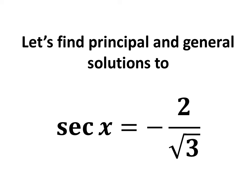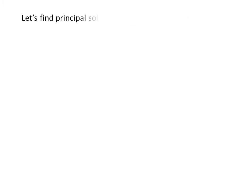In this video, we will learn to find the principal and general solutions to the equation secant of x is equal to minus 2 upon square root of 3. Let us first find the principal solutions. We know the solutions to the trigonometric equation for which x is greater than or equal to 0 and less than 2 times pi are the principal solutions.